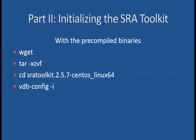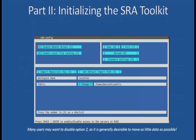To initialize the pre-compiled binaries, you go through these standard steps. You'd need to go into the bin directory, and then run vdbconfig -i. That would take you to a VT100 screen. One thing most people don't know is that if you disable local file caching, you will not download the entire SRA file from dbGaP, but only a small part of it. That can be very useful if your use case is to analyze one gene at a time over 10,000 cases or patients.